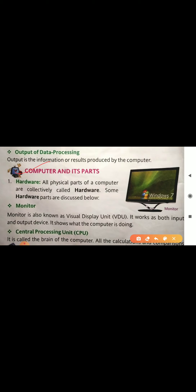Now we are going to start with computer and its parts. Basically there are two parts of computer: hardware as well as software. All the physical parts of a computer that can be felt and touched are collectively called hardware. Some hardware parts include monitor and CPU. Monitor is also known as the visual display unit — the screen of your computer. It works as both an input and output device and shows what the computer is doing.